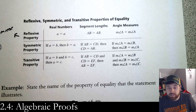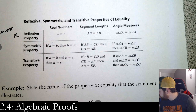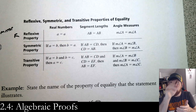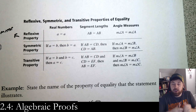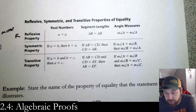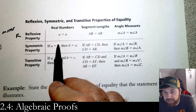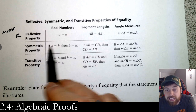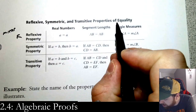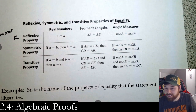The symmetric property — think of symmetry, the same on both sides. Think of the heart you made as a kid: you folded a paper in half, drew half a heart, cut it out, and you got a full heart because it's the same on both sides. For equality: if a equals b, then b equals a. You can flip it — that's the symmetric property. These are all properties of equality, so this only applies to equal signs.